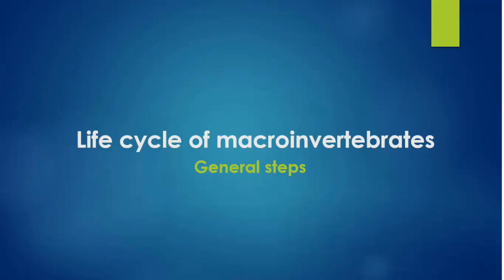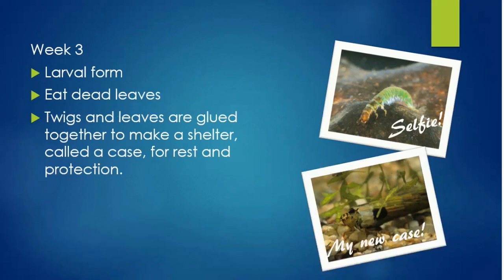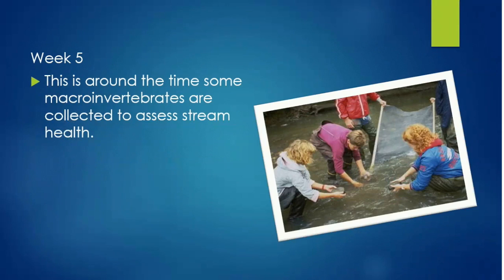Researchers collect macroinvertebrates throughout their life cycle, so let's talk about the general life cycle of macroinvertebrates using a caddisfly as our example. Eggs laid on a rock at the water's edge hatch in early October. By the third week, the hatched eggs have become larvae. The larvae eat dead leaves and build a shelter called a case for protection. Around this time, researchers collect macroinvertebrates for biomonitoring — collecting insects in the larval stage, or the nymph stage in the case of other insects like dragonflies and mayflies.